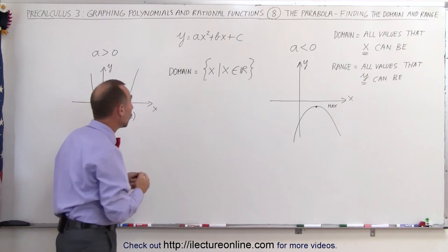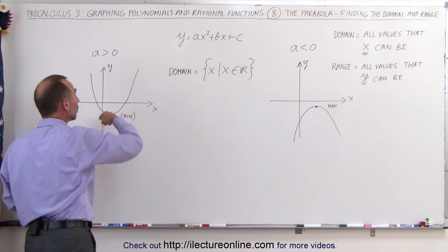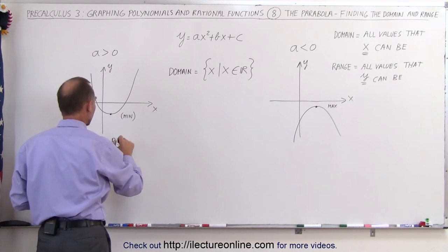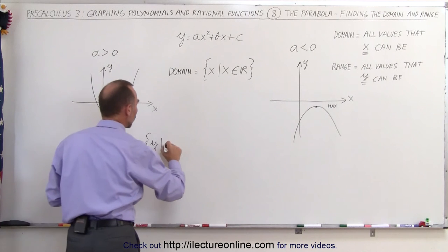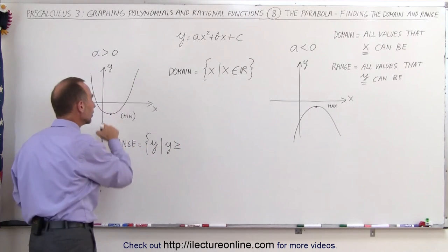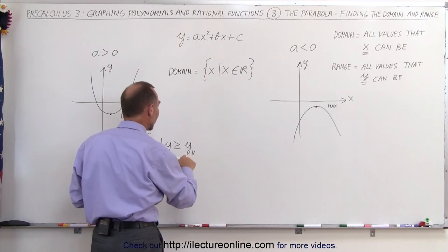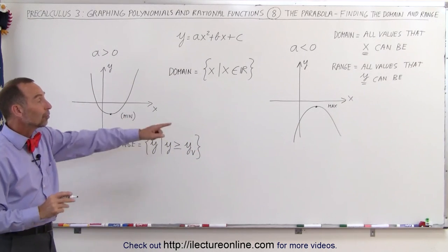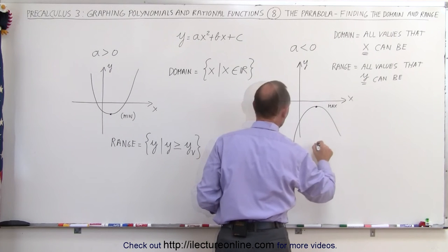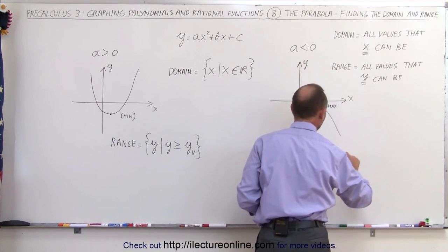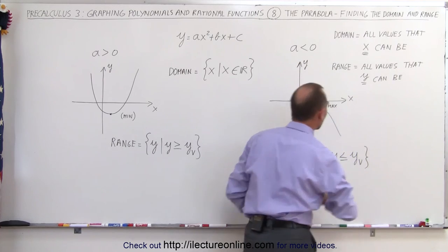For the range — in the y-direction — there is indeed a limit. In the case where the parabola opens upward, there's a lower limit: the range is all y-values such that y is greater than or equal to that minimum value, which is the y-coordinate of the vertex. In the case where the parabola opens downward, there's a maximum value: the range is all y-values such that y is less than or equal to the y-coordinate of the vertex, written as y-sub-v.